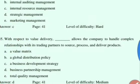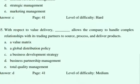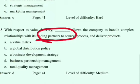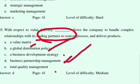With respect to value delivery, dash allows the company to handle complex relationships with its trading partners. The options are: value metrics, global distribution policy, business development strategy, business partnership management, or total quality management. Obviously the correct answer is Business Partnership Management — within business partnership management, you learn how to maintain good relationships with your partners.